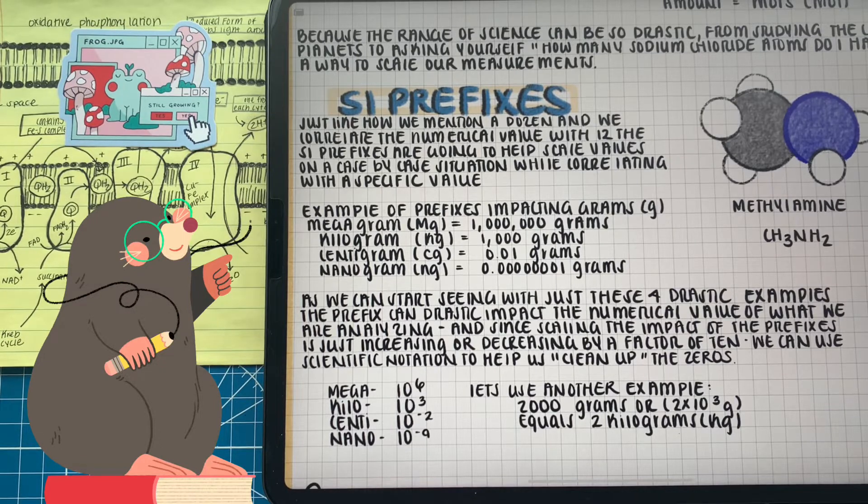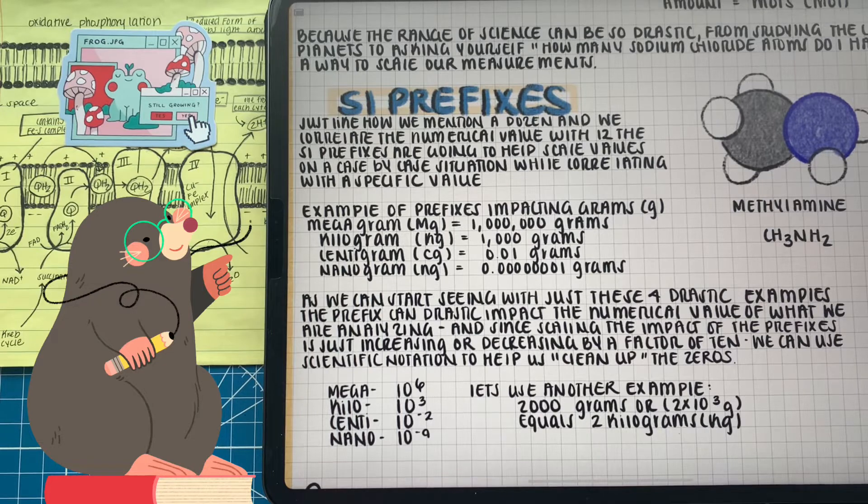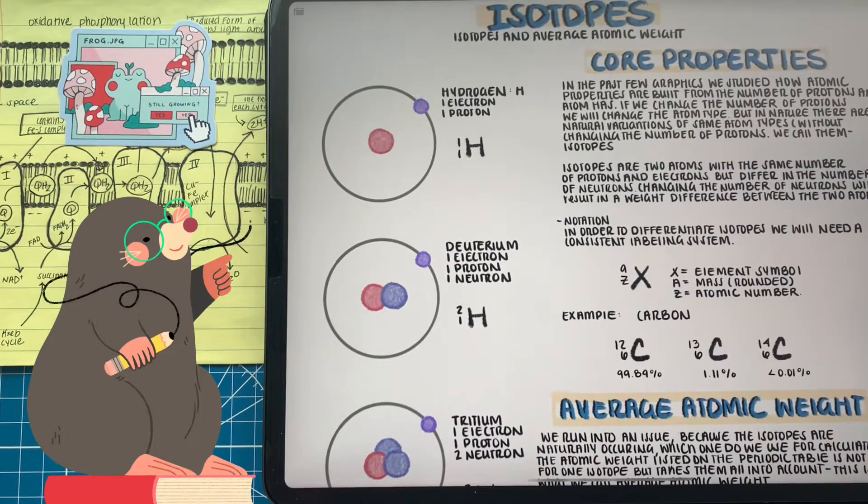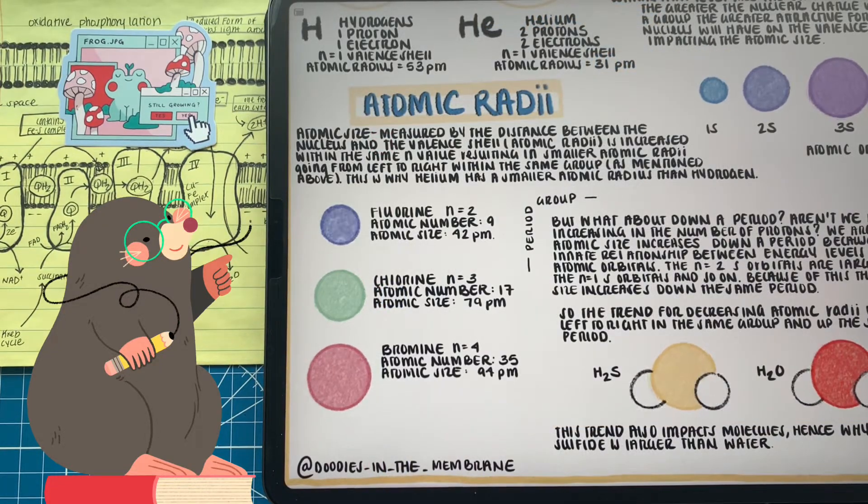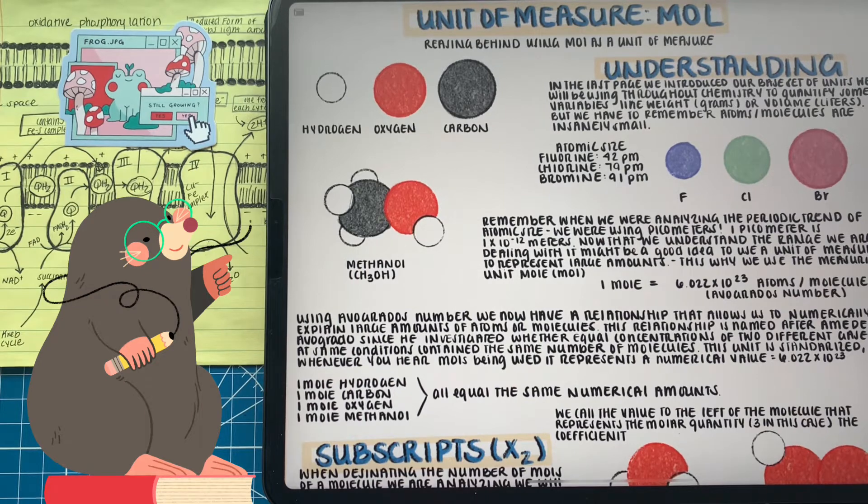The basis of stoichiometry revolves around quantifying atoms, but there's one thing that we have to think about - atoms are really, really small. Fluorine was 42 picometers, chlorine was 79, and bromine was 94 picometers when we talked about atomic radius and periodic trends. But what is a picometer and how does it relate to meters? Well, one picometer is 1 times 10 to the negative 12 meters. That's a lot of zeros.